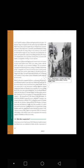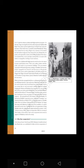On that day, a large crowd gathered in the enclosed grounds of Jallianwala Bagh. Some came to protest against the government's new repressive measures; others had come to attend the annual Baisakhi fair. Being from outside the city, many villagers were unaware of the martial law that had been imposed. Dyer entered the area, blocked the exit points, and opened fire on the crowd, killing hundreds. His object, as he declared later, was to produce a moral effect — to create in the minds of Satyagrahis feelings of terror and awe.